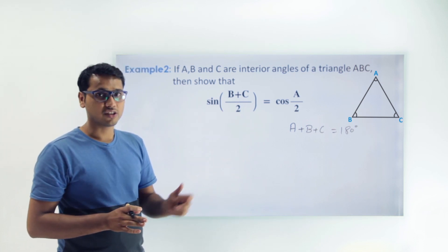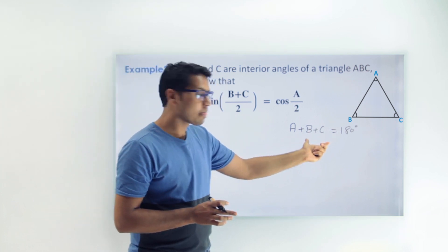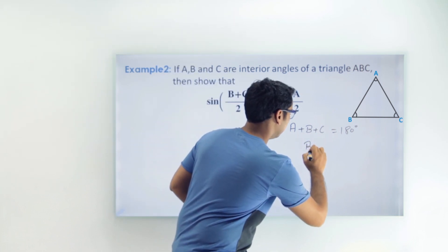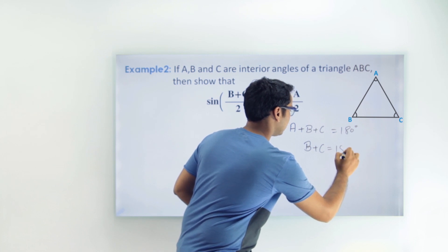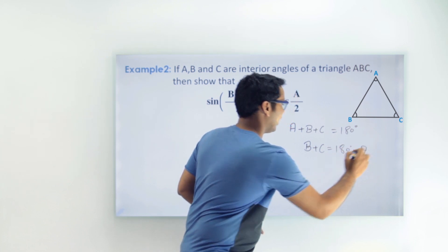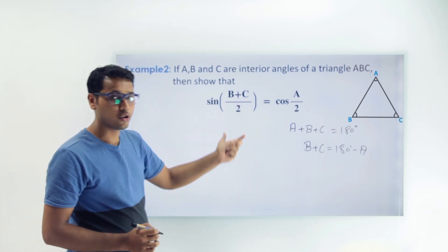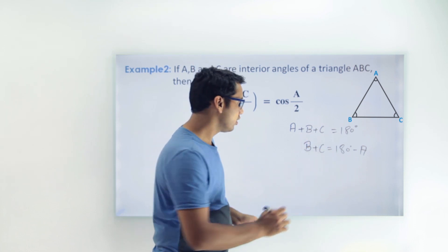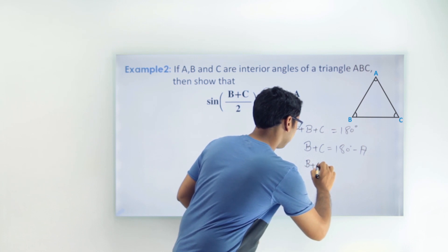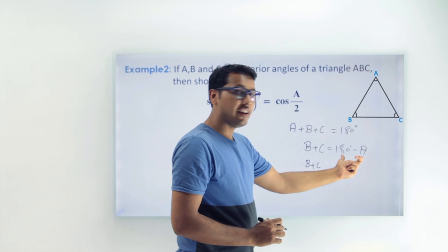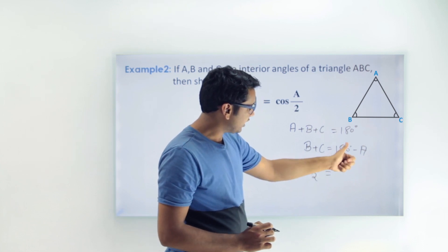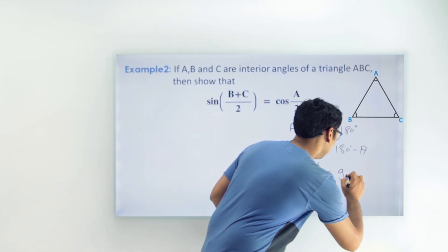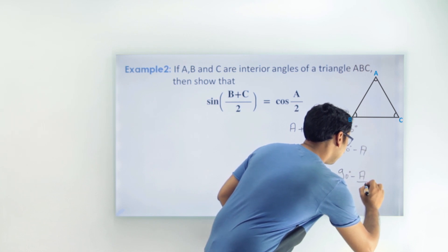Let's find the complementary angle. From A + B + C = 180°, we get B + C = 180° − A. We have to find the value of (B + C)/2, so divide both sides by 2. We get (B + C)/2 = 90° − A/2.